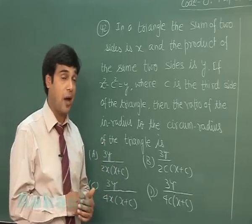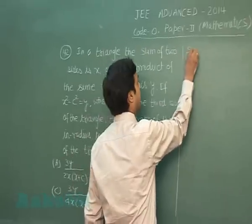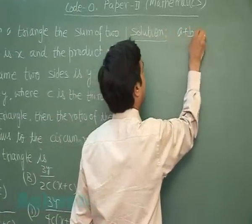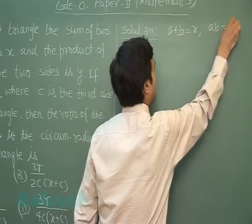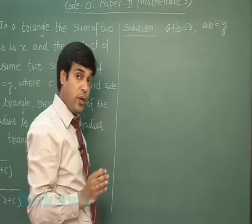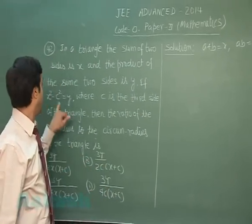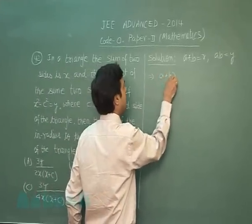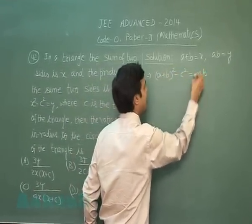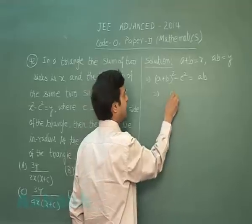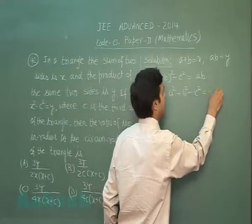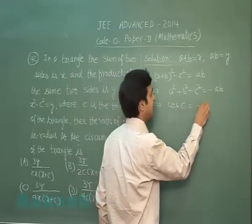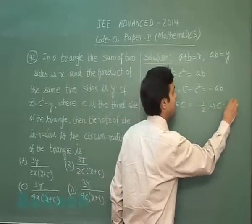So we have to find small r upon capital R. It is given to me a plus b is X and ab equals Y. Also given to me X square minus C square equals Y. That means a plus b whole square minus C square equals ab. I simplify it then obtain this result, meaning that cos C is minus half, or C is 2π by 3.